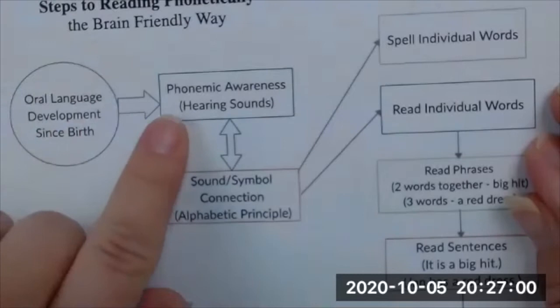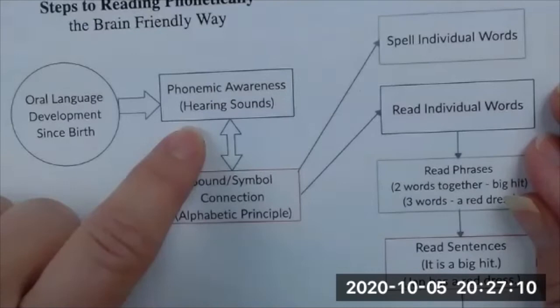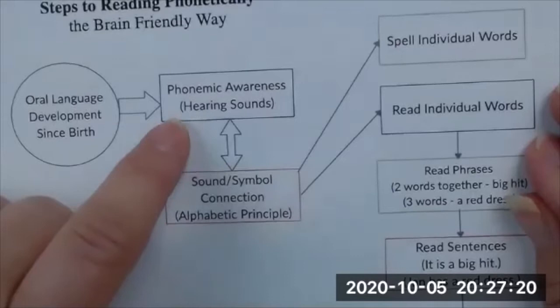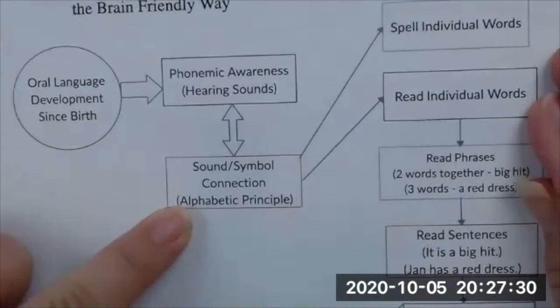Children begin to develop being able to hear the sounds in our language. That's how they learn how to talk — they hear the sounds, and they start to be able to repeat and refine and develop the muscles in their mouth and tongue to reproduce those sounds. They're hearing the sounds of the language, reproducing the sounds of the language. And then we do this funny thing where we say, now we're going to take those sounds and attach them to symbols.